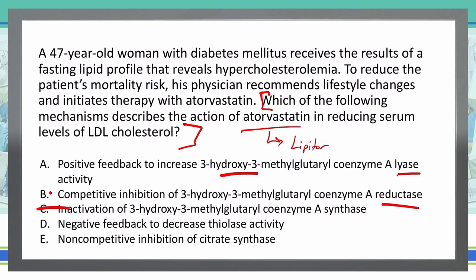Answer D is negative feedback to decrease thylase activity — that is not the function of a statin. Answer E is non-competitive inhibition of citrate synthase. Citrate synthase is something in the Krebs cycle, not an HMG-CoA reductase inhibitor, which is what atorvastatin is. So I'm down to either the HMG-CoA lyase activity in A or the reductase inhibition in B.